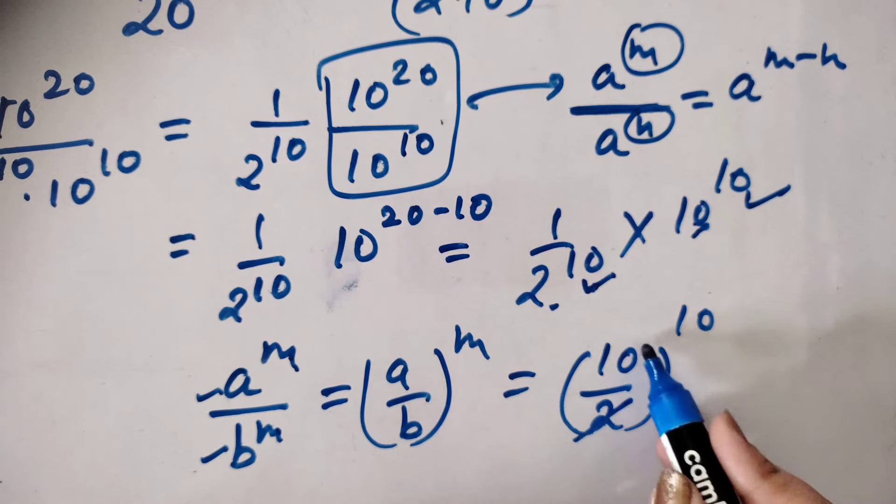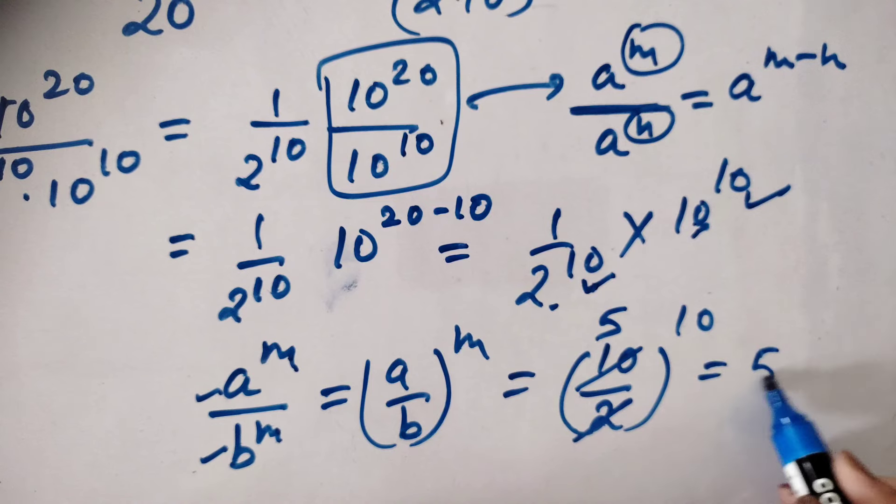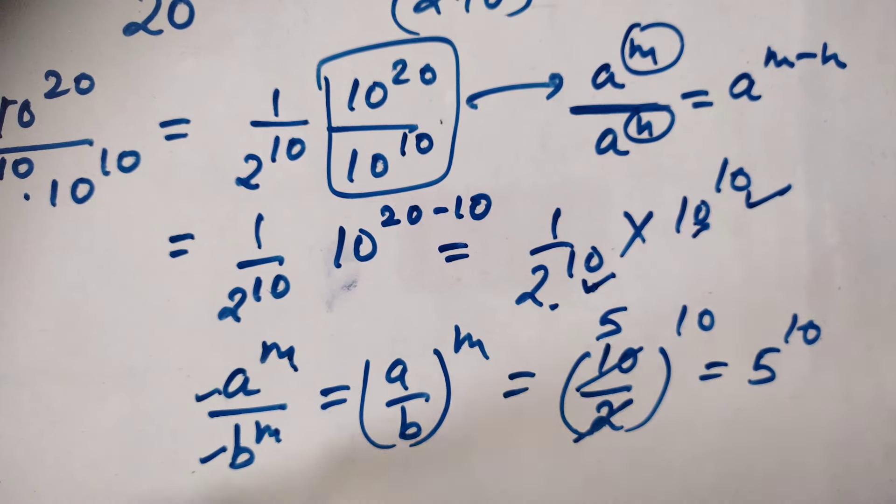Now you can see 2 cancel out 10, how many times, 5 times, 5 power 10, so this is the final answer of this question.